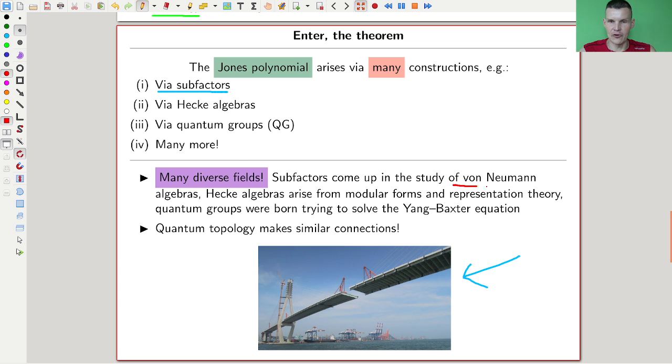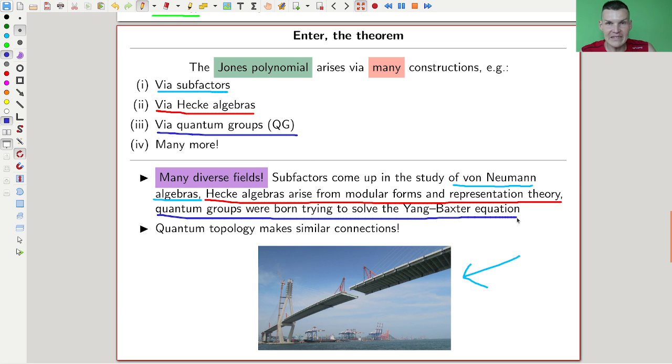What Jones did was establish the relationship between von Neumann algebras and geometric topology. Geometric topology was just knot theory, and von Neumann algebras was this theory of subfactors. The Jones polynomial arises in many different fields, and therefore builds a bridge between them. The original one from Jones was for subfactors in functional analysis, which looks very different from knot theory.